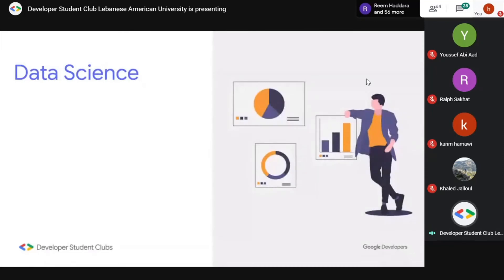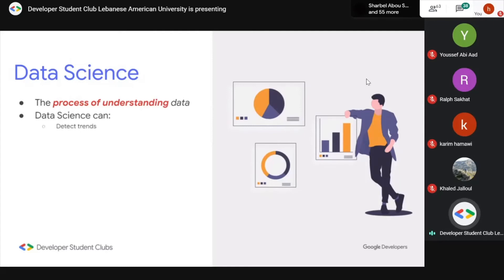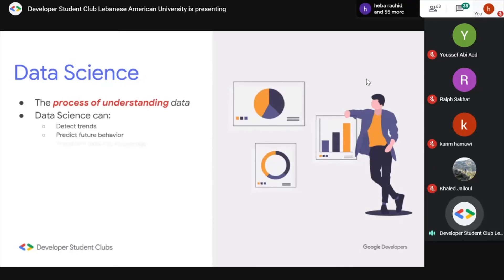Another field is data science, which is growing in popularity across all fields. In pretty much any company these days, there is a requirement for a data scientist. Data science is simply the process of understanding data — it can detect trends, predict future behavior, and transform data into knowledge. Data is simply stats — numbers on a screen. Knowledge, on the other hand, is actual useful information we can act on.